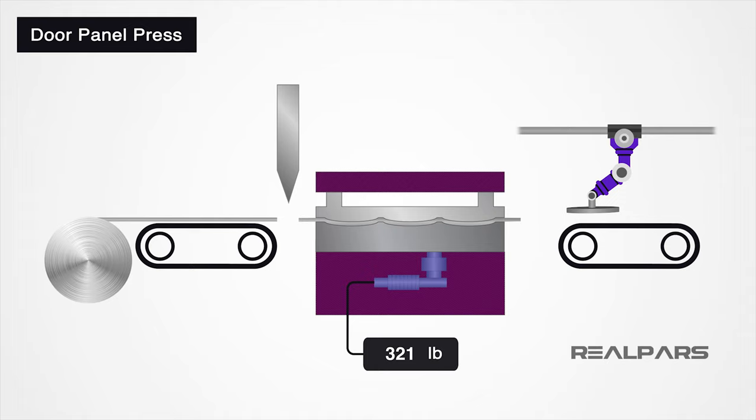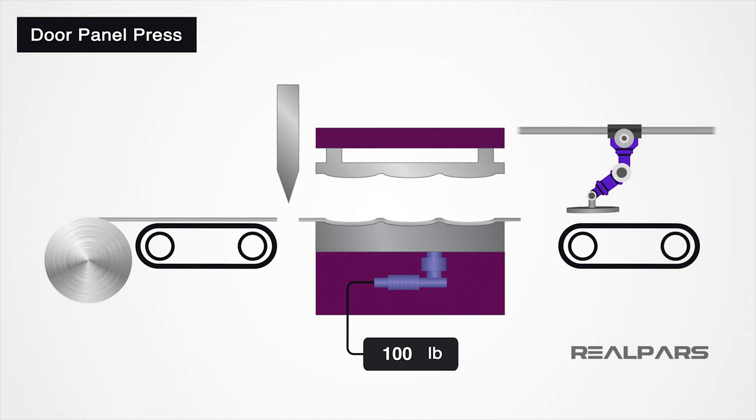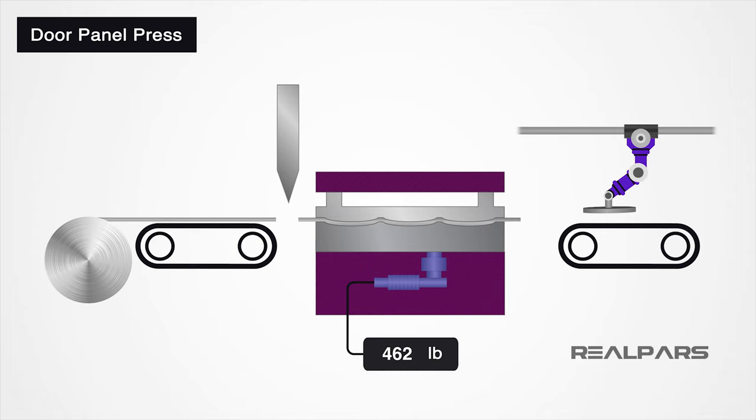As the die closes, a load cell is sensing the amount of force applied on the die and the aluminum. Once the applied force has reached a predetermined limit, the die will open and the panel will now be removed. If the applied force is too light or too heavy, the panel could be damaged or not pressed to the correct pattern.